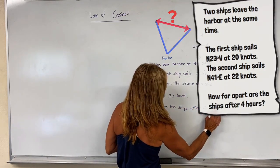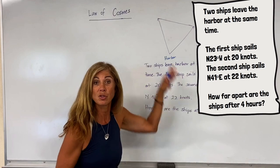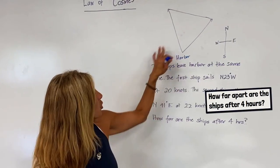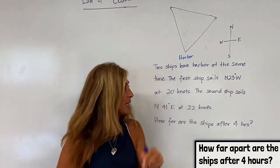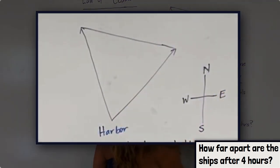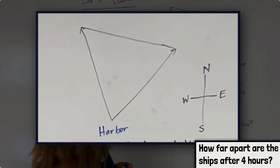The first thing you always want to do in a situation like this is sketch a diagram. If you notice, I have my harbor here. Now here's the tricky part: north 23 degrees west. Which ship is that one?